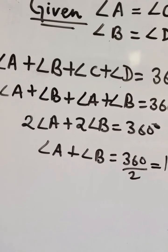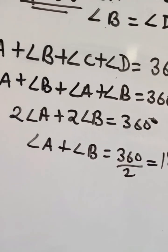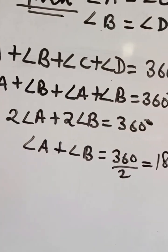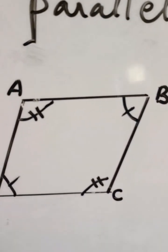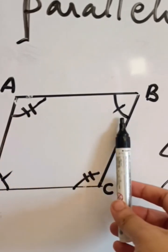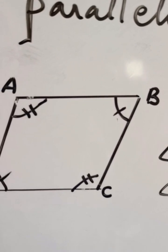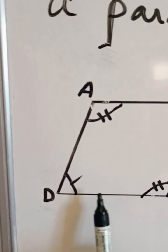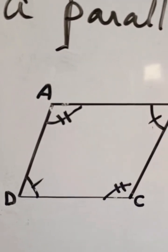The sum of angle A plus angle B equals 180 degrees. In the quadrilateral, we know that sum of angle A and angle B equals 180 degrees. Similarly, we can say that the sum of angle C and angle D equals 180 degrees.